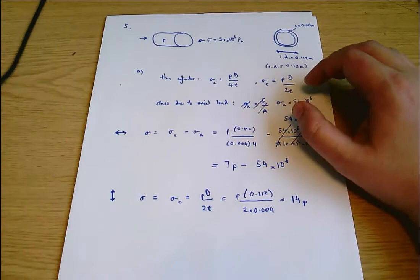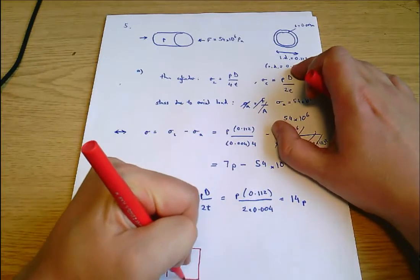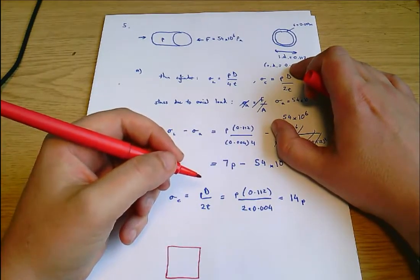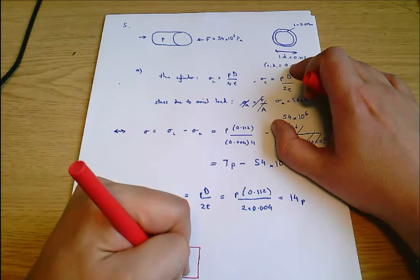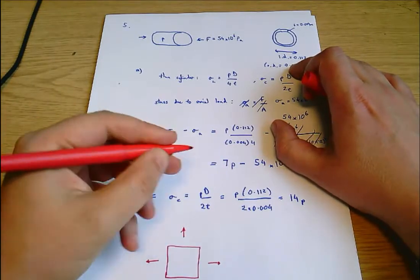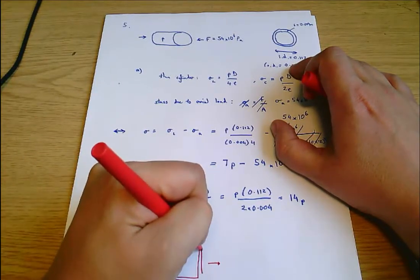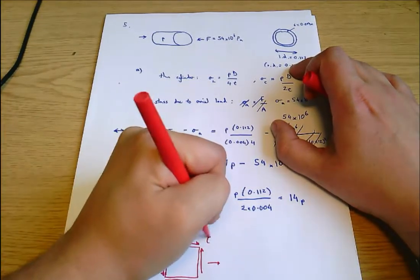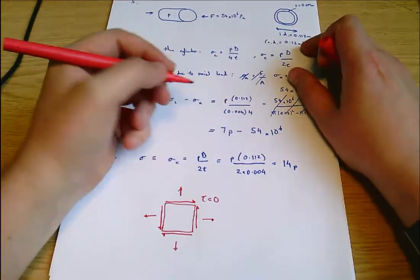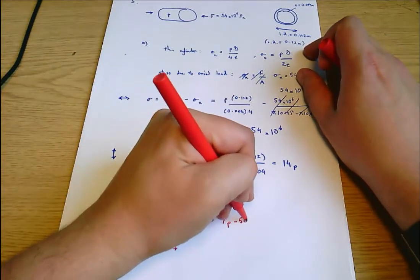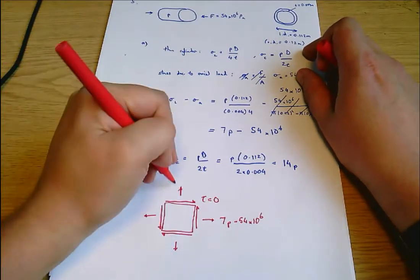sigma equals sigma C which equals PD over 2T, and that's P times 0.112 divided by 2 times 0.004, which is 14P. So that seems reasonable. Now with all these questions, you want to head towards a single planar stress element. Our single planar stress element here has tau equals 0, a longitudinal stress of 7P minus 54 times 10 to the 6, and a circumferential stress of 14P.